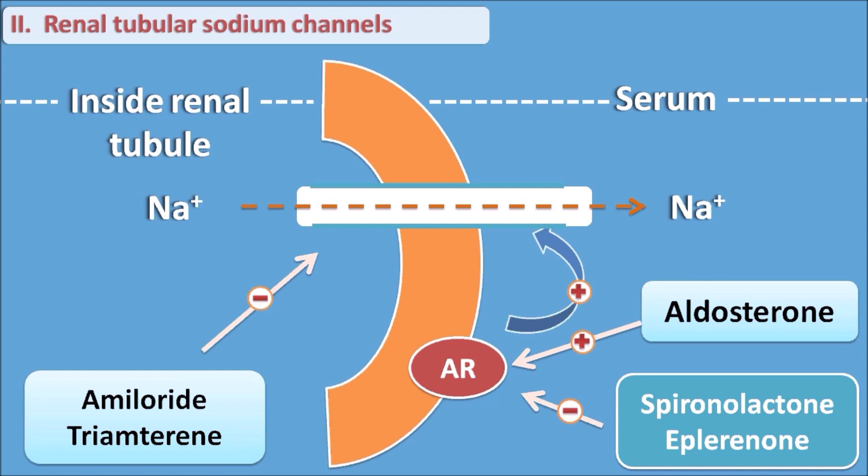All these drugs are called potassium-sparing diuretics because they inhibit sodium reabsorption. When sodium is not reabsorbed, potassium is retained in the body, which means they decrease potassium excretion, potentially leading to hyperkalemia. Alternatively, these drugs can be used in conditions of hypokalemia. These are the various drugs acting on the renal tubular sodium channels.